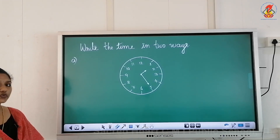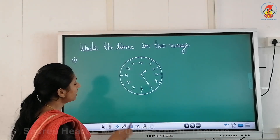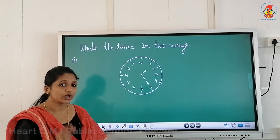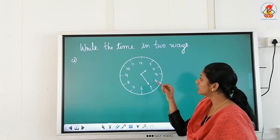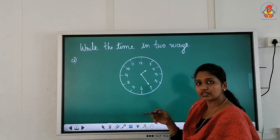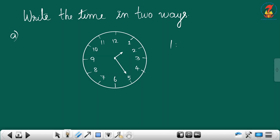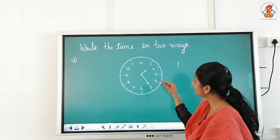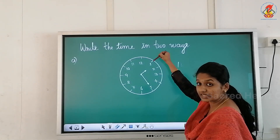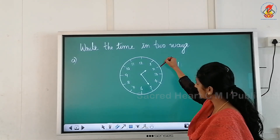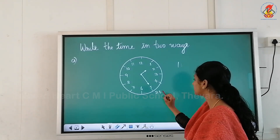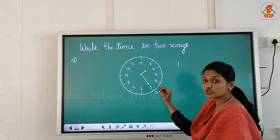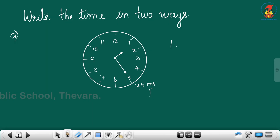Write the time in two ways. The hour hand, the smaller hand, is between one and two — it has just crossed one and not yet reached two, so we say it is one. The minute hand is on five: from twelve to one is five minutes, then ten, fifteen, twenty, and twenty-five minutes past. The longer hand is on the right-hand side, so the time is one twenty-five.